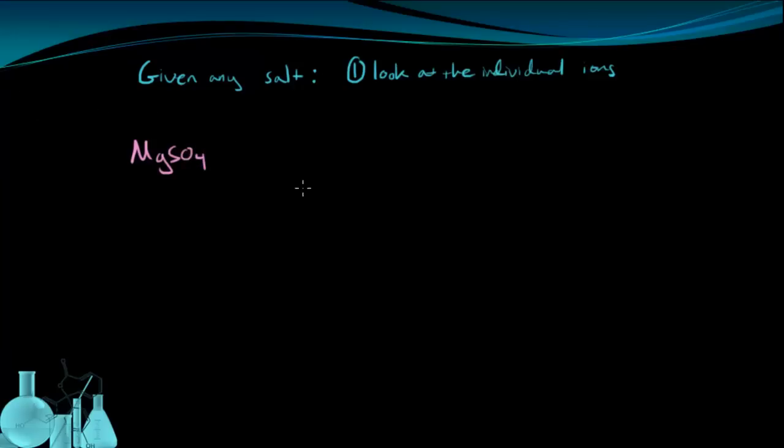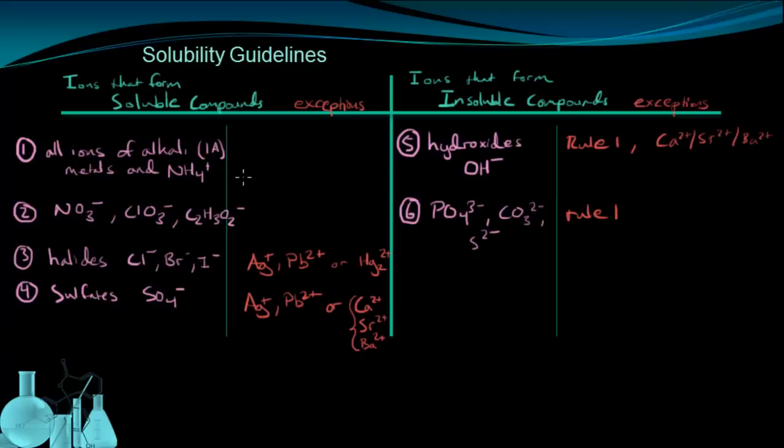the first thing you want to do is look at the individual ions. So for magnesium sulfate, that's going to be the Mg2+ ion and the SO4 2- ion, magnesium and sulfate. Next, we're going to look for any relevant rules that apply to either the magnesium ion or the sulfate ion.